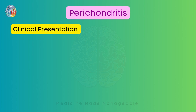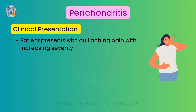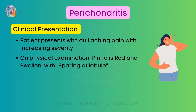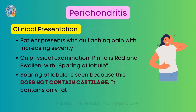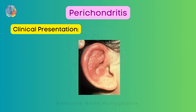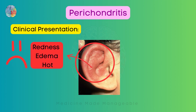The patient will present with dull aching pain, and the severity of this pain will keep on increasing. On physical examination, the pinna is red and swollen. Extremely important to note: the lobule will be spared in this condition, because the lobule does not contain cartilage — it only contains fat. In this image of perichondritis, the upper portion is inflamed with redness, edema, and the pinna is hot to touch, but the lobule looks relatively normal.